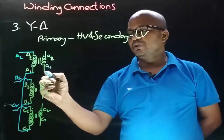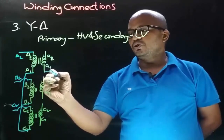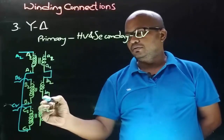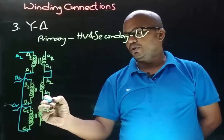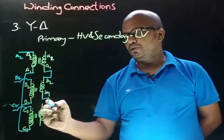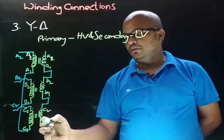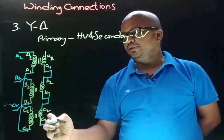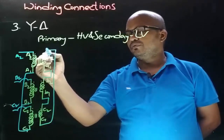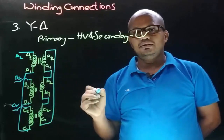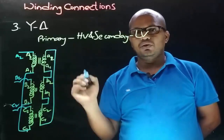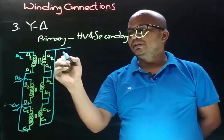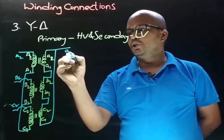So here we are joining the non-dot end of one coil with the dot end of another coil, the non-dot end of this coil with the dot end of this coil, and the non-dot end of the C coil with the dot end of another coil. Let's take the connections from the dot ends.